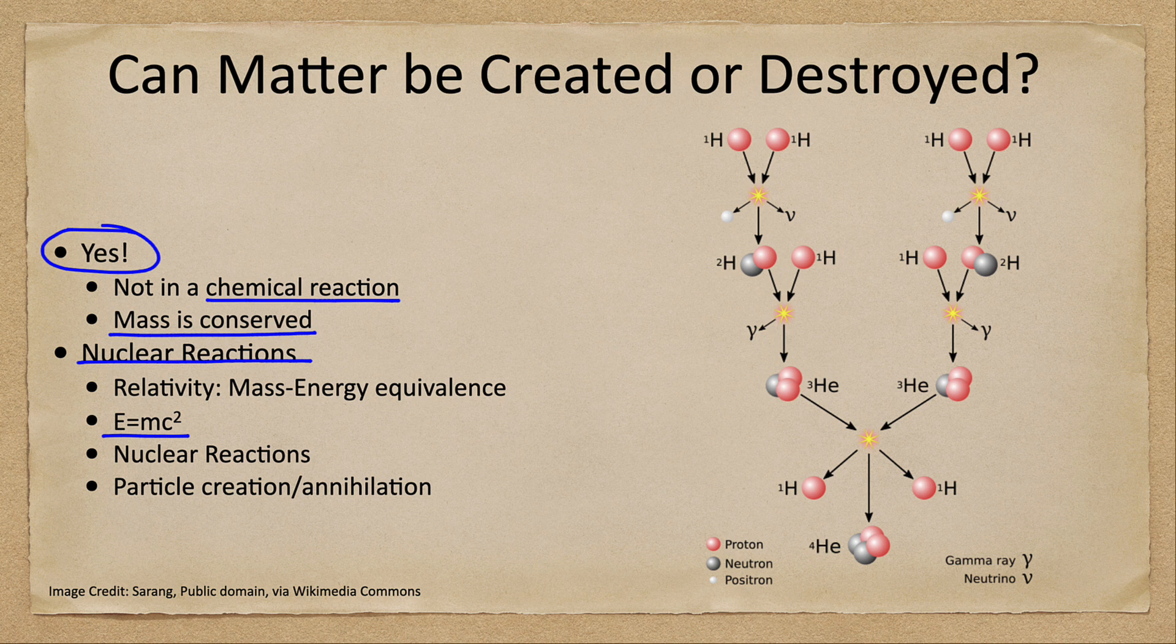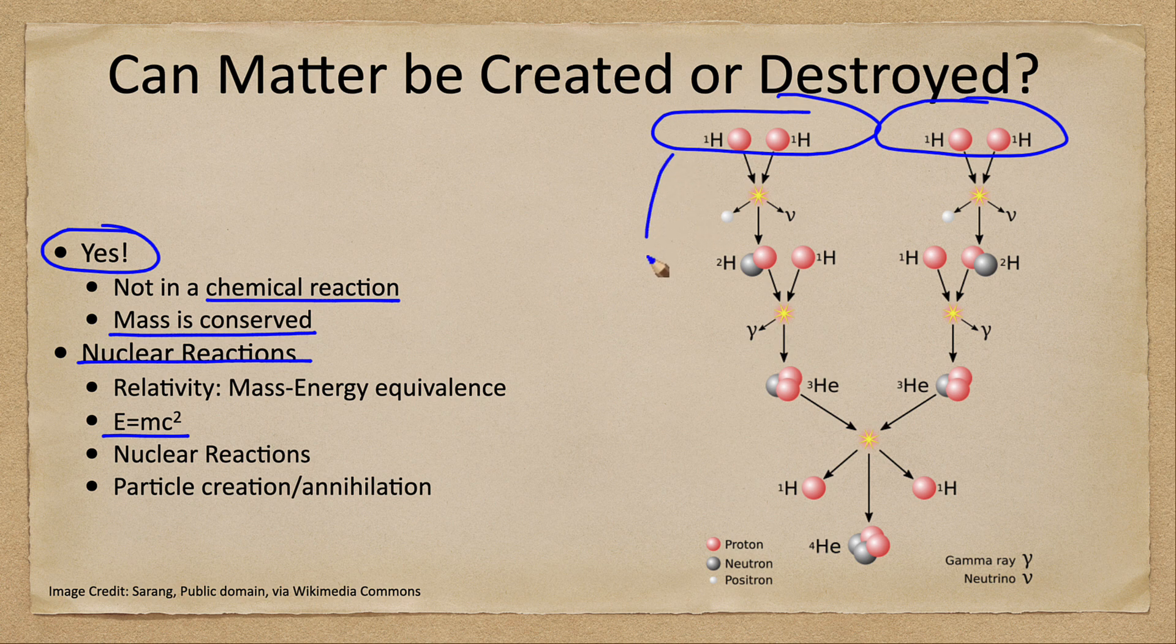What this does is in effect take four hydrogen atoms—two here and two here—and through this process convert them into an atom of helium. Now you'll see here that the particles are not exactly the same.